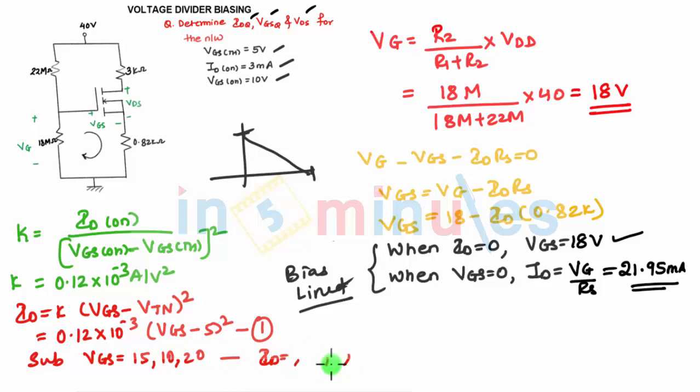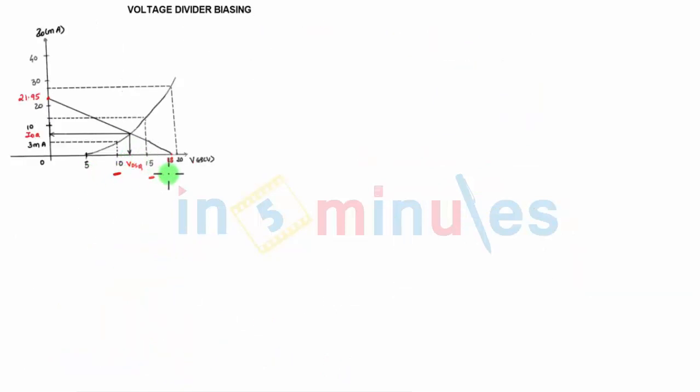After drawing the transfer characteristics for these three values, 10, 15 and 20, you got 27 milliampere for 20, 12 milliampere for 15, and 3 milliampere for 10. These are the three points.